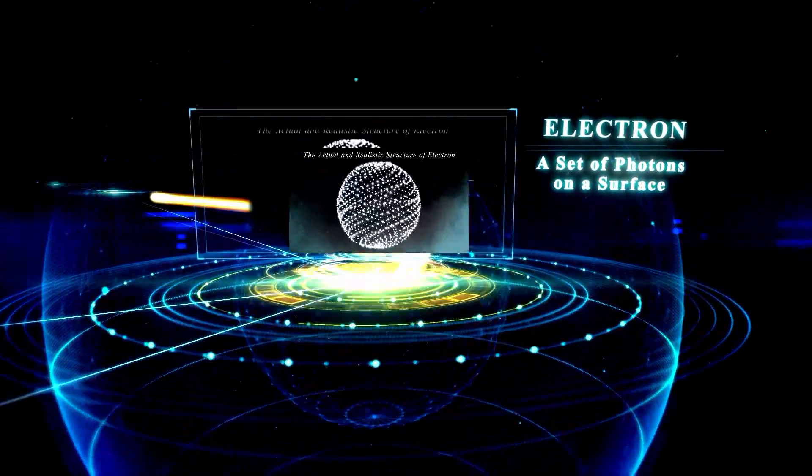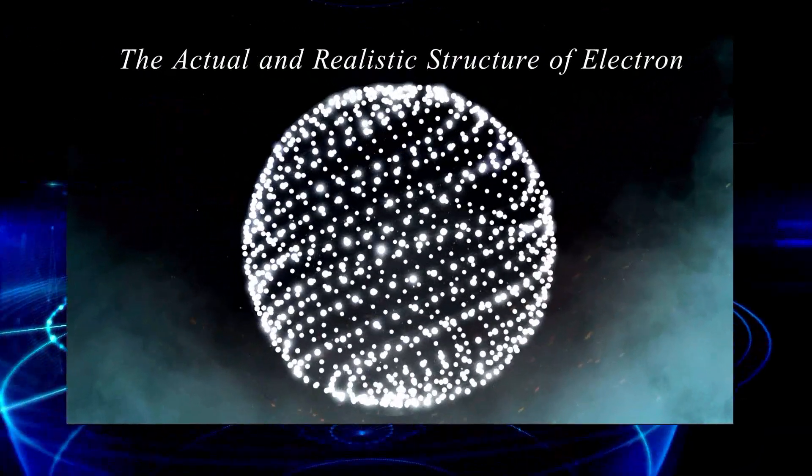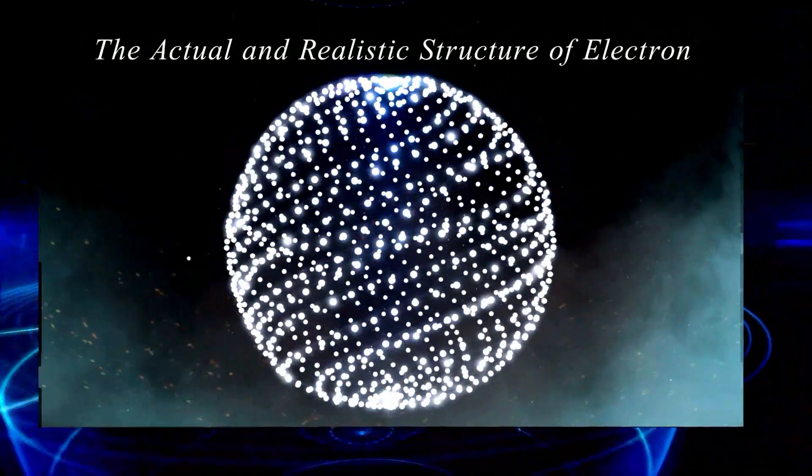The electron: a set of rotating photons on a spherical surface without central core.